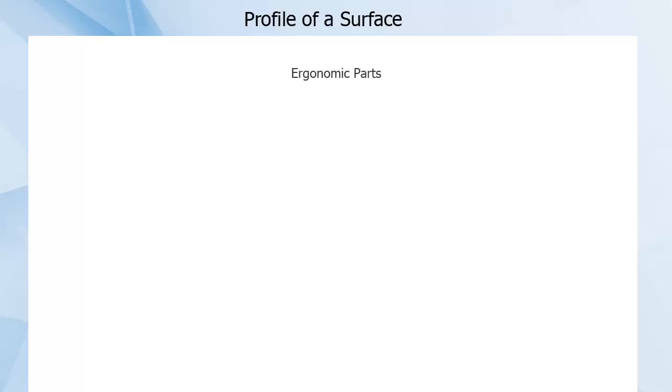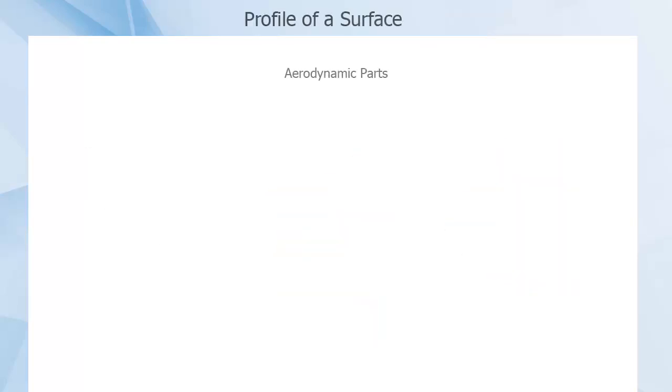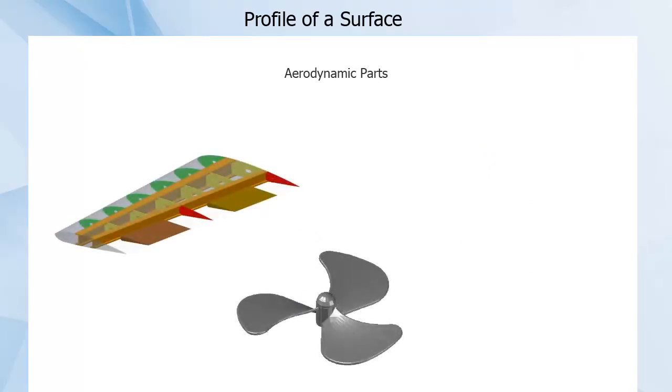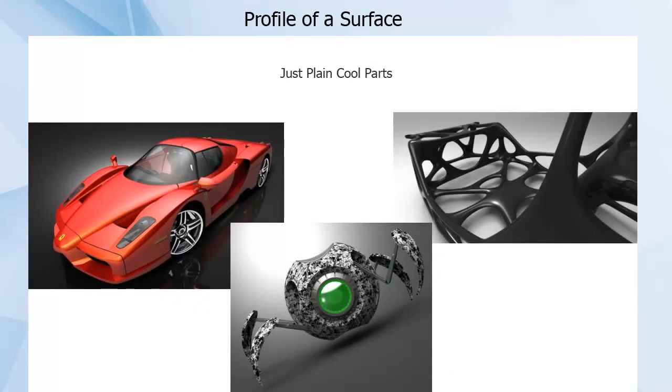Ergonomic parts could include grips, saddles, and chair surfaces. Aerodynamic parts are plane wings, rotor blades, and any other part with an aerofoil or hydrofoil shape. Just plain cool parts are what they sound like.